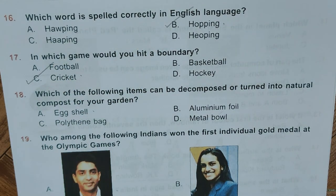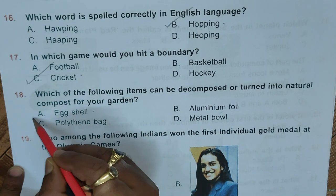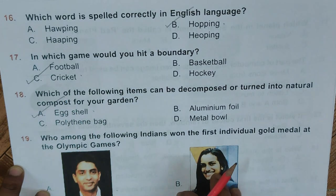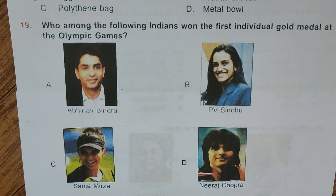Question 18: Which of the following items can be decomposed or turned into natural compost for your garden? A. Eggshell, B. Aluminium foil, C. Polyethylene bag, D. Metal bowl. Correct answer is A, Eggshell.